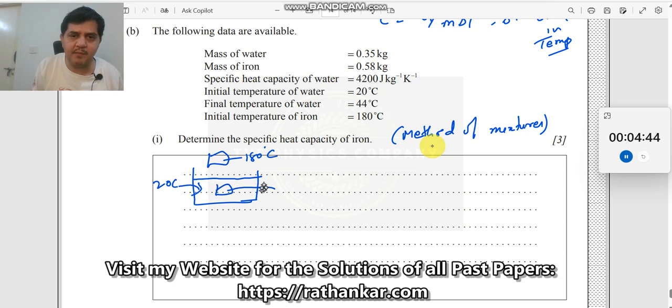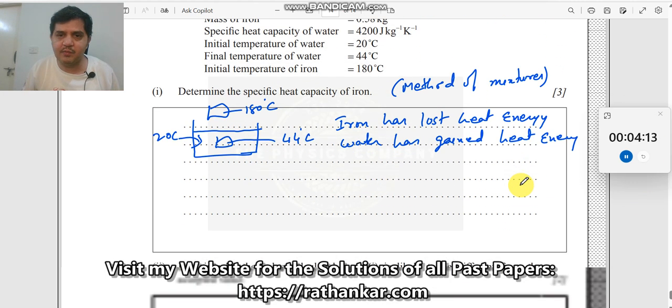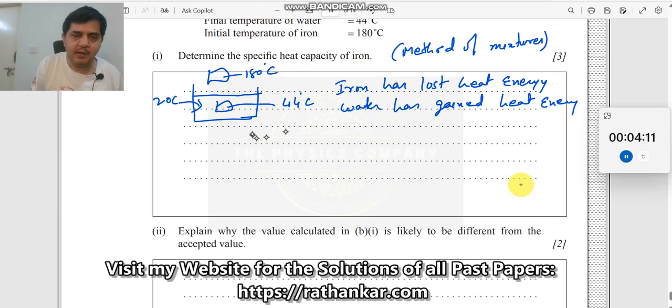When you drop this, the water gets heated up and iron loses its heat. As a result of it, the temperature of water plus iron, final temperature means both the temperature of water and iron are at the same temperature, which is at 44 degrees centigrade. What has happened in this process? That means iron has lost heat energy. Can we say this? Definitely. Because it is used to increase the temperature of water.